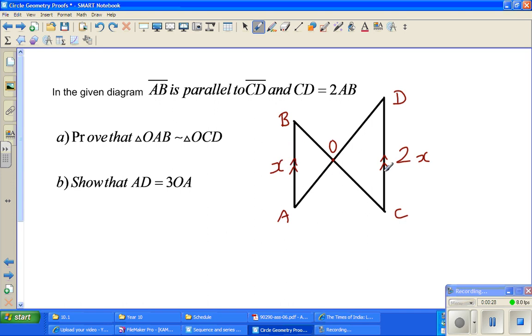I want to prove that triangle OAB is similar to triangle OCD. Now for two triangles to be similar, they have to have the same shape. But the way to prove two triangles—there are different ways, but one of the easiest ways to prove two triangles similar is to prove the corresponding angles of the triangles are equal.